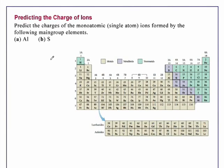Predicting the charge of ions. Predict the charges of the monatomic, that is single atom ions, formed by the following main group elements: A, aluminum, B, sulfur.